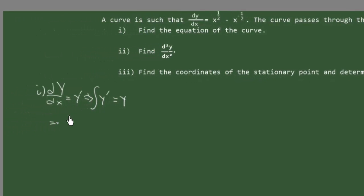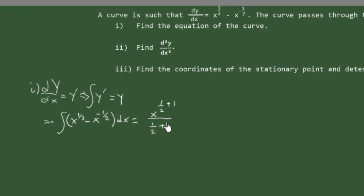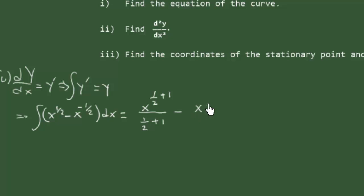This means that we will have the integration of x to the power 1.5 minus x to the power minus 1.5, dx. This is going to give us x to the power of 1.5 plus 1 over the new power. We increase the power and then divide by 1.5 plus 1, minus x to the power of minus 1.5 plus 1 over the new power, plus the constant of integration.